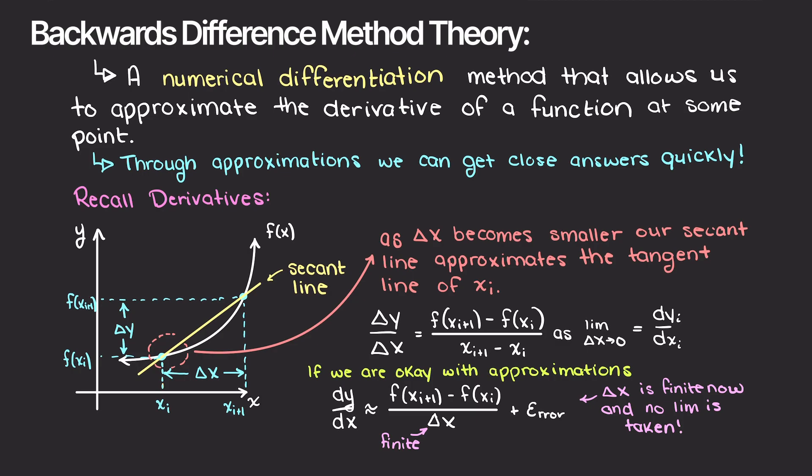We want an understanding of how much accuracy we need to give up in order to get a good approximation of our derivative. How do we go about finding that? We do this through the use of Taylor series approximations.